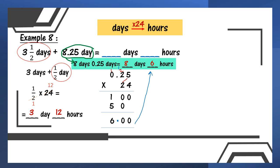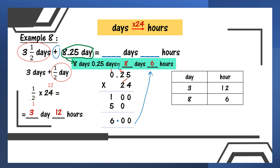Not finished yet — one more step, we need to add. Using a table: 3 days 12 hours plus 8 days 6 hours. 12 plus 6 is 18. 3 plus 8 is 11. Check your hours — 18 is not more than 24, no need to minus 24. So the final answer is 11 days and 18 hours.